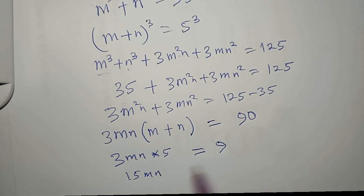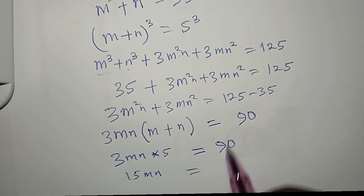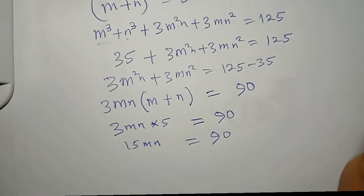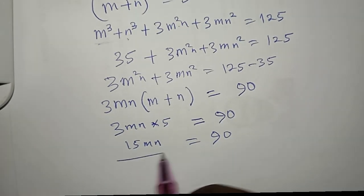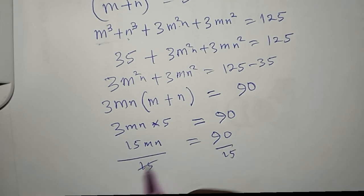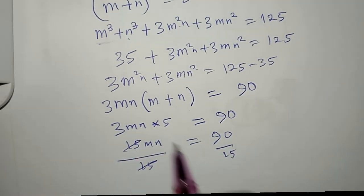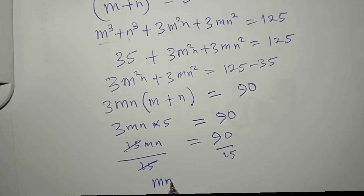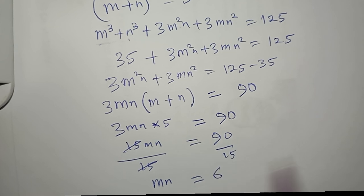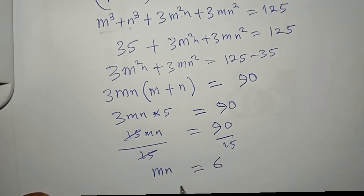That gives 15mn = 90. Dividing both sides by 15, mn = 6.